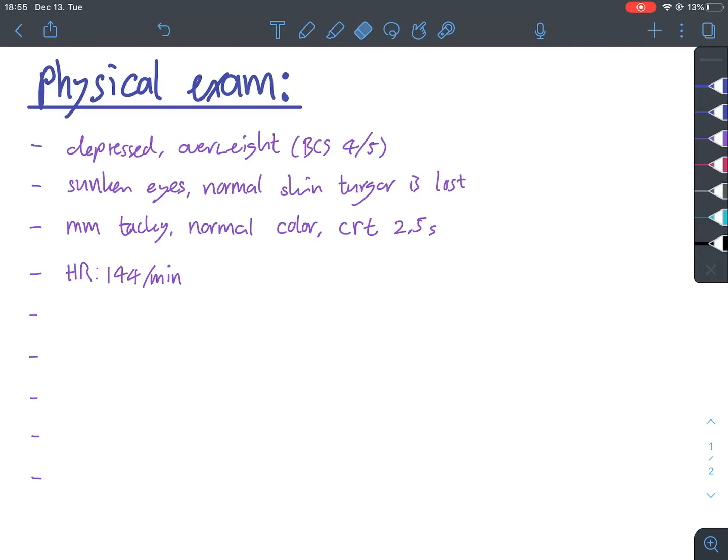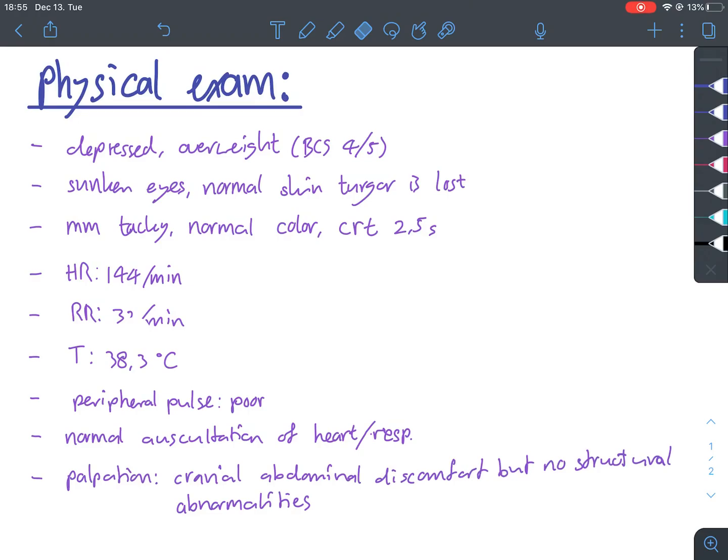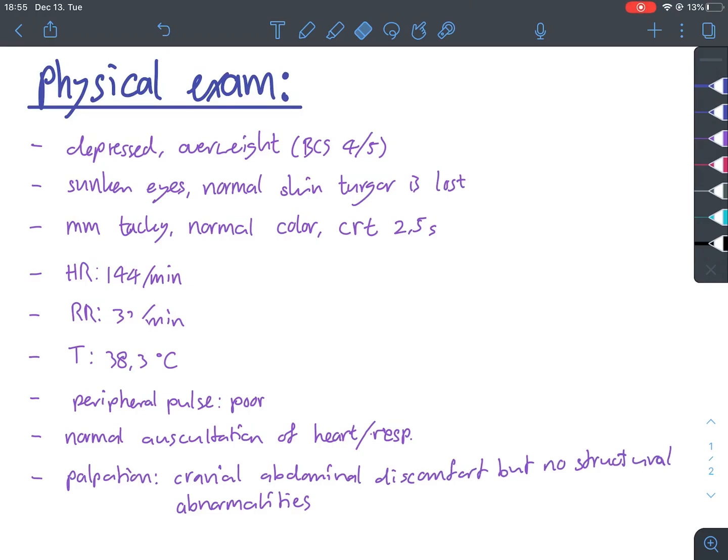Heart rate is 144 per minute. Respiratory rate is 32 per minute. Temperature is 38.3 Celsius. The peripheral pulse quality is poor. There's normal auscultation over the heart and respiratory system. On palpation, we notice cranial abdominal discomfort, but no structural abnormalities.